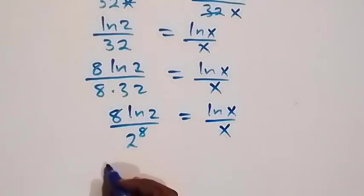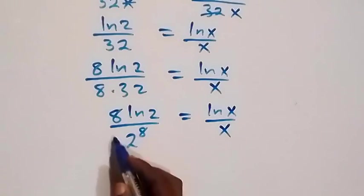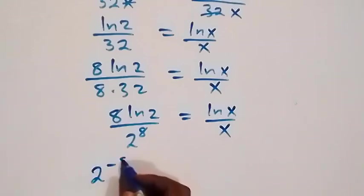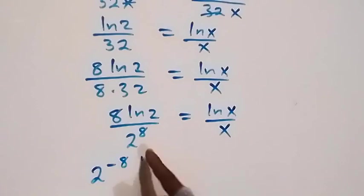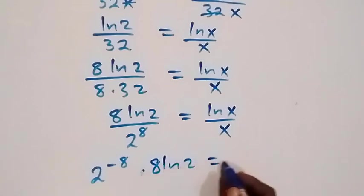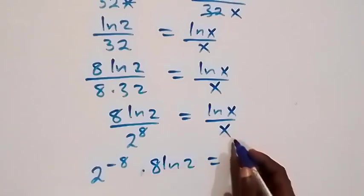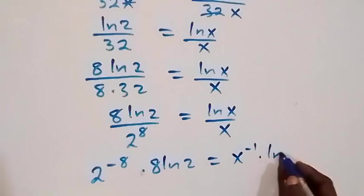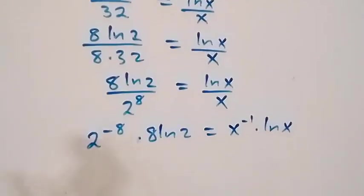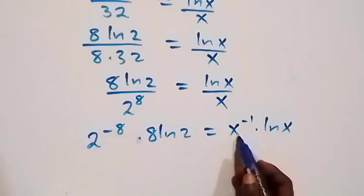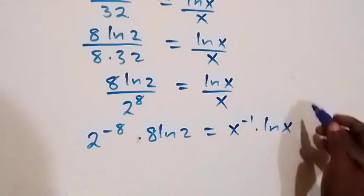Here, we can separate this and write: 1 over 2 raised to power 8, which is 2 raised to power minus 8, then multiply by 8 ln 2 equals to 1 over x, which is x raised to power minus 1, then times ln x. That is, we can equally write 2 raised to power minus 8 and x raised to power minus 1.